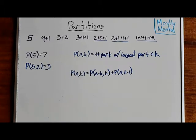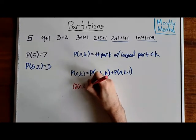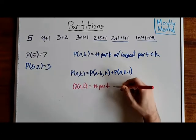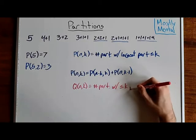But, maybe that's not the best way to simplify the problem. Maybe, instead of looking at how big the parts are, we should be looking at how many we have. So, let's call q of n, k, the number of partitions where there are, at most, k parts.